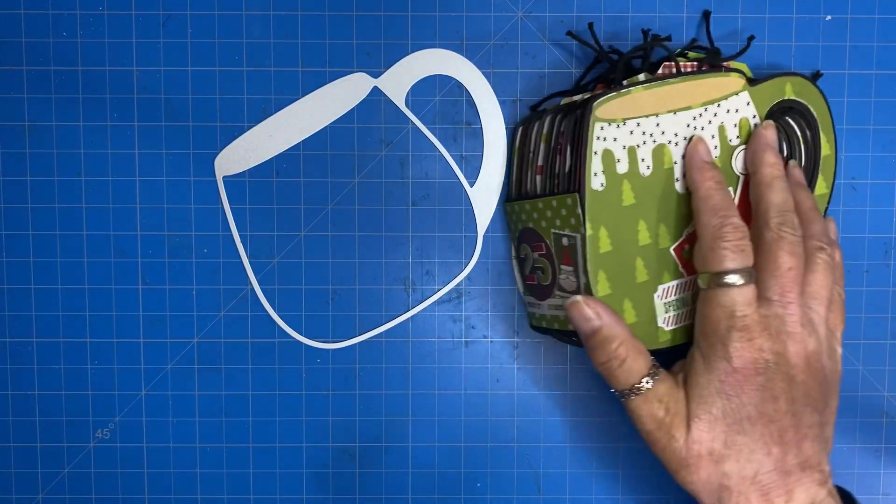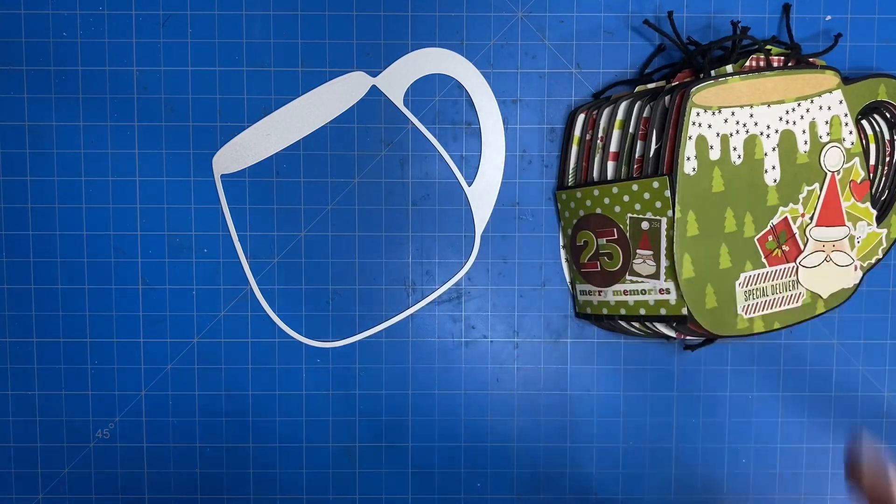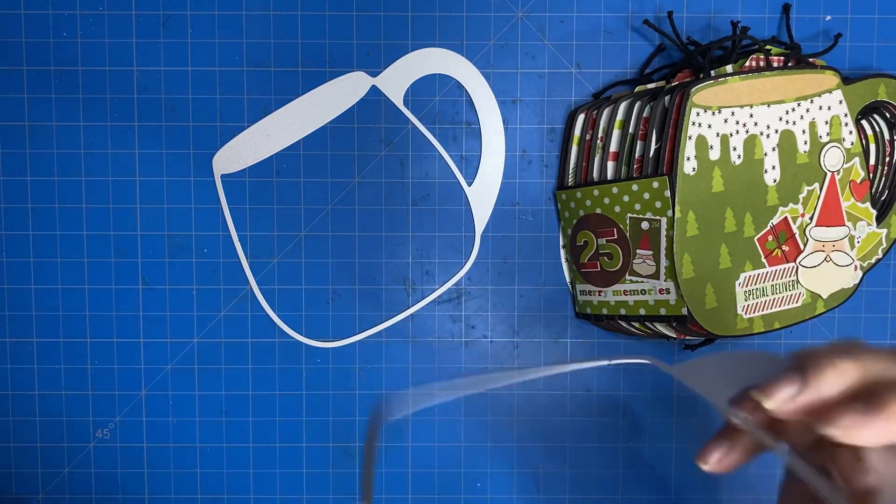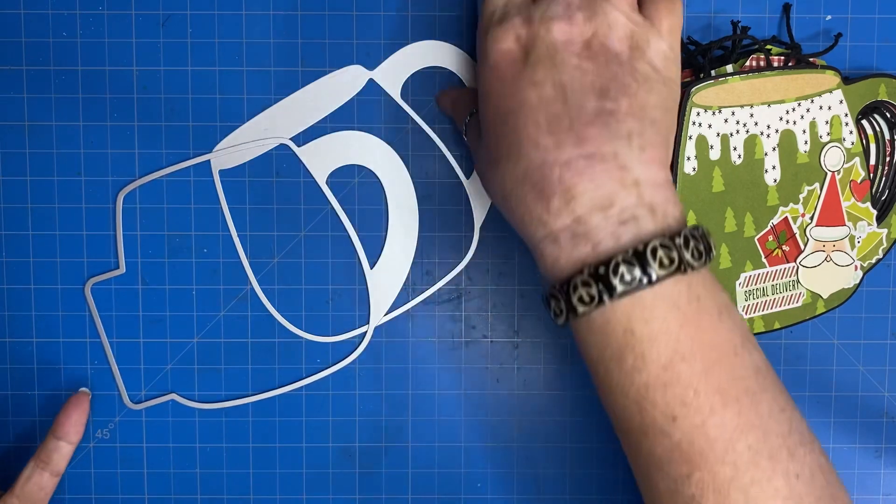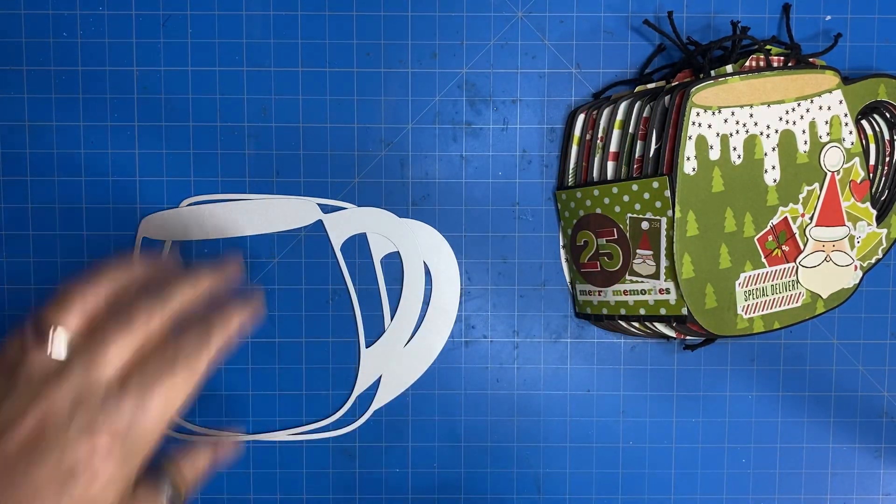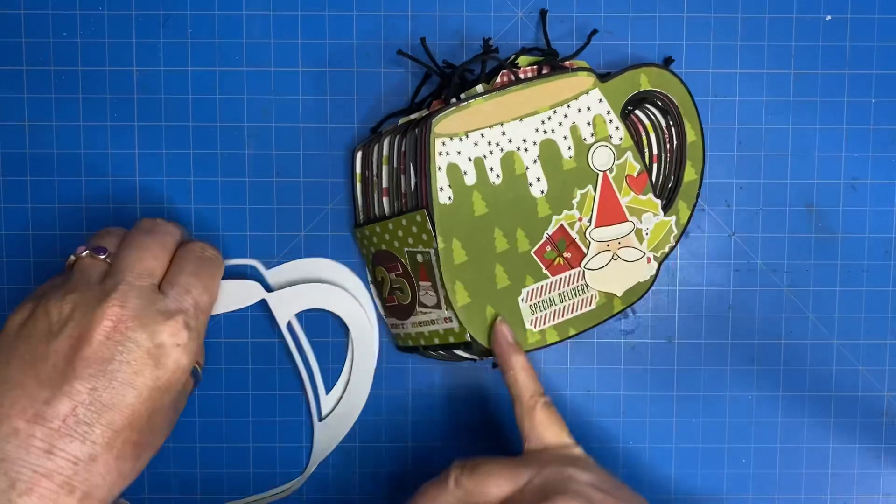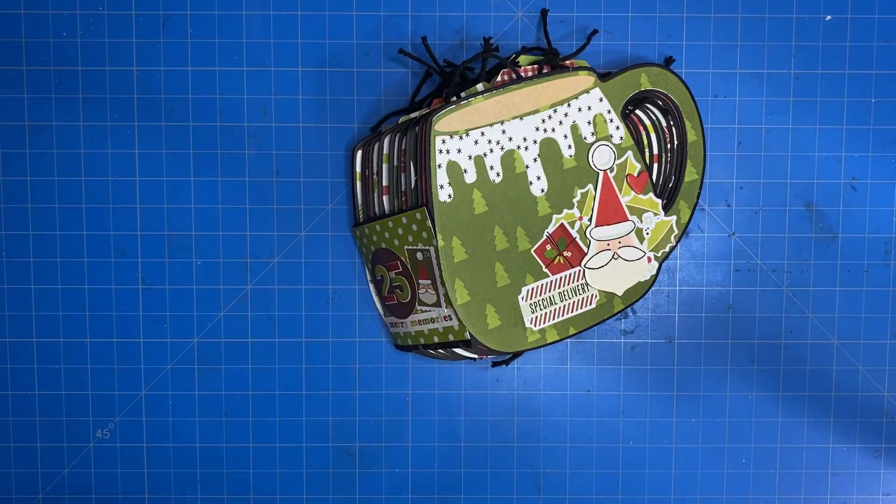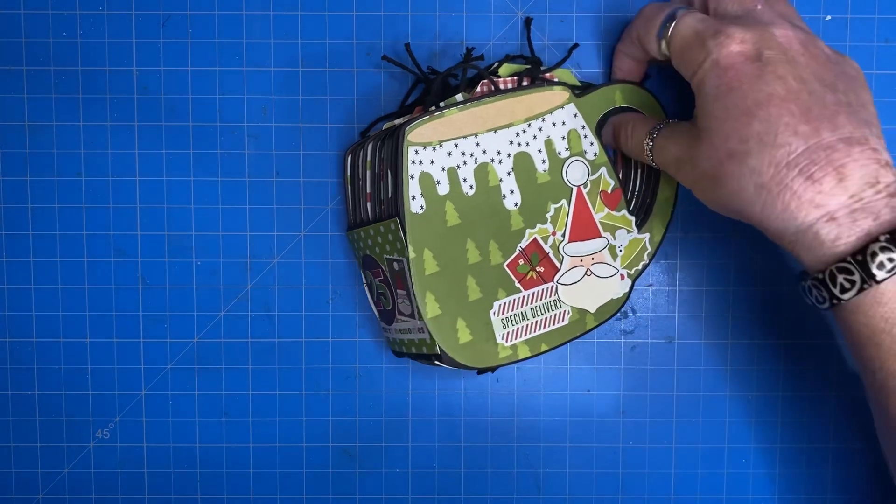So it has dies not only for the pages but also for the mats. You can see a full flip through of this mini album.